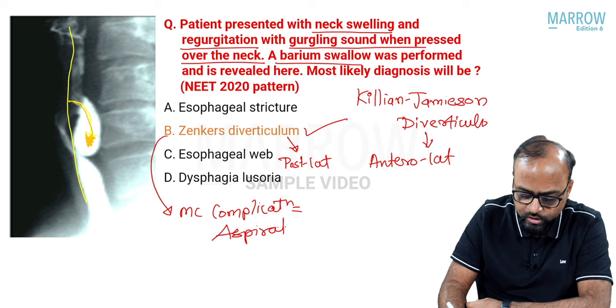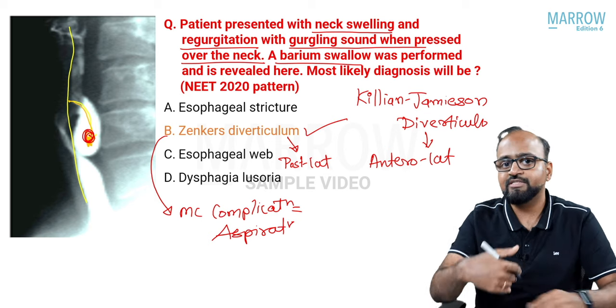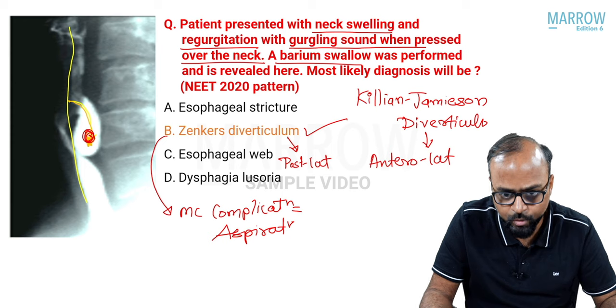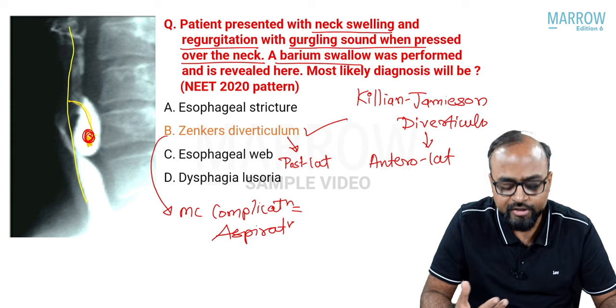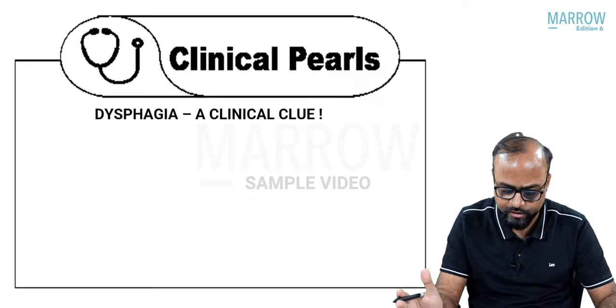The contents retained inside the diverticulum get aspirated, eventually giving rise to aspiration pneumonia. So that is what is Zenker's diverticulum.